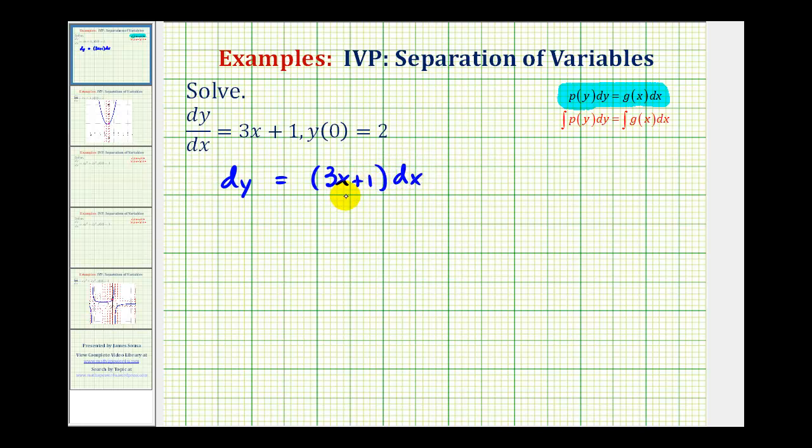Now that it's in the correct form, we can integrate both sides of the equation and then solve for y. The integral of one with respect to y would just be y plus a constant of integration. But because we'll also have a constant of integration on the right side of the equation, we'll go ahead and just put the constant once on the right.